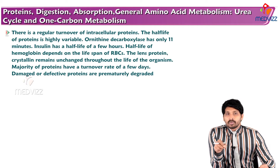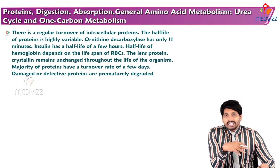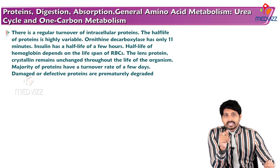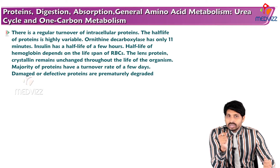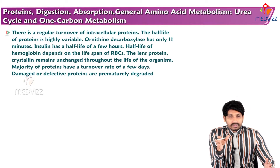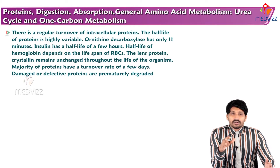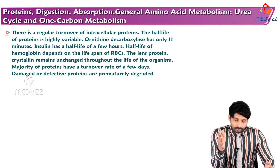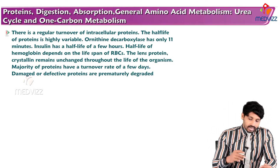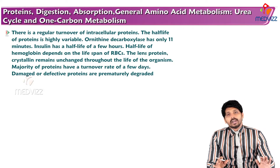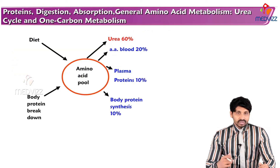There is a regular turnover of intracellular proteins. The half-life of proteins is highly variable: ornithine decarboxylase has 11 minutes, insulin has a half-life of a few hours, hemoglobin's half-life depends on the lifespan of the RBC, and lens proteins last a lifetime. The majority of proteins have a turnover rate of a few days, while damaged or defective proteins are prematurely degraded and cleared from the system.